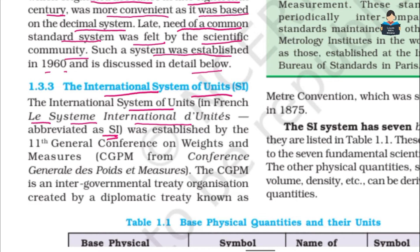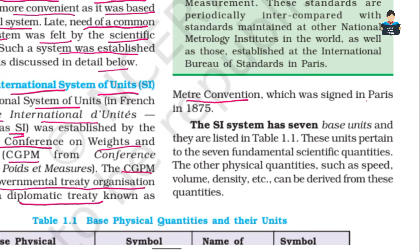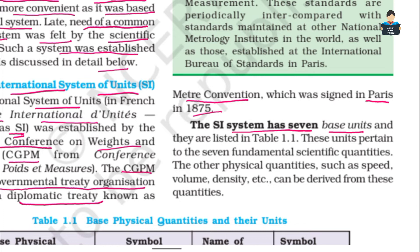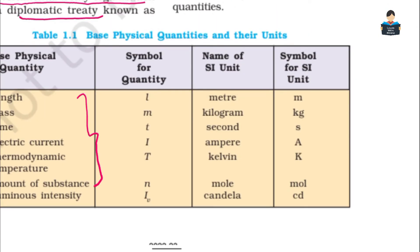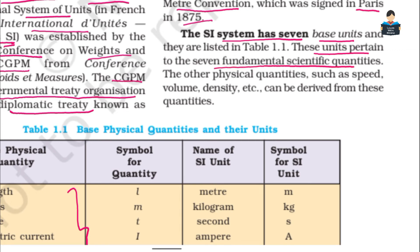The SI system was established by the 11th General Conference on Weights and Measures, known as CGPM — an intergovernmental treaty organization created by the diplomatic treaty known as the Meter Convention in 1875. In this system, there are seven base units: length, mass, time, electric current, thermodynamic temperature, amount of substance, and luminous intensity. These units pertain to seven fundamental scientific quantities.